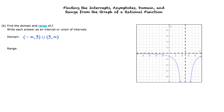Now let's find our range, remembering that the range is the set of all the numbers that appear as y-coordinates of points on the graph. To find the range, we project the graph onto the y-axis. The numbers that appear as y-values of points on the graph make up our range, which is negative infinity to 0.